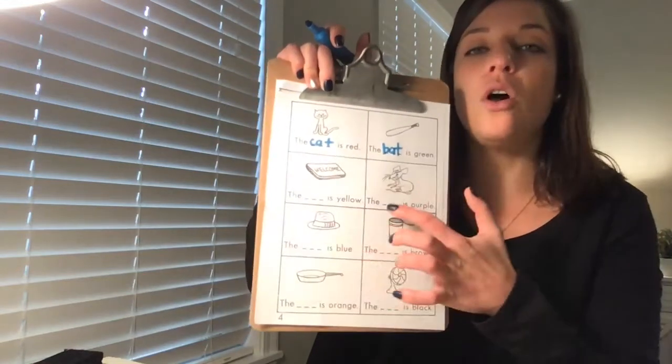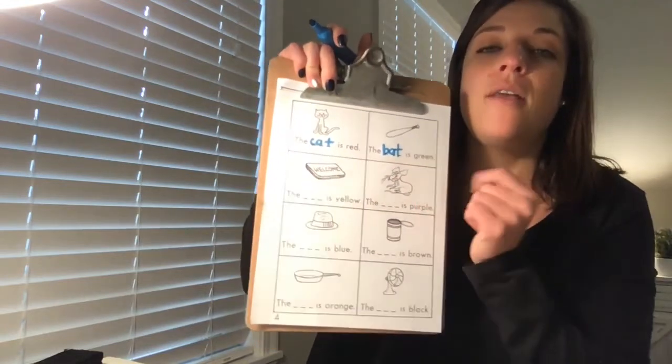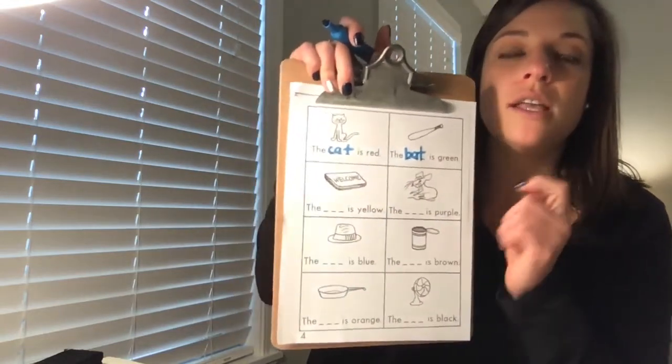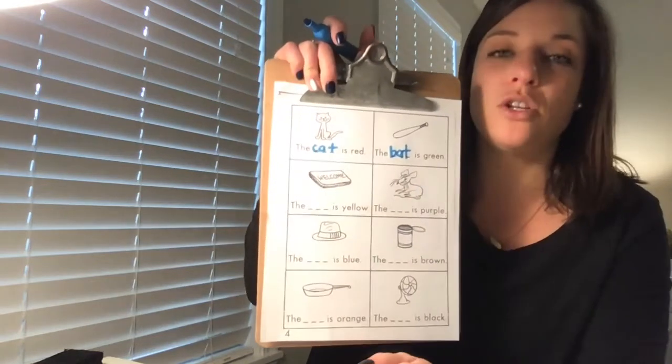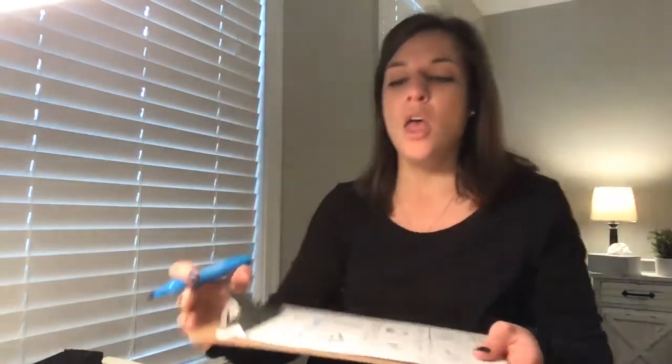So you're going to fill in all of your words here, stretching them out like we did with cat and bat. And then you're going to go back in with your crayons and you're going to color the picture the same color as the color word, okay? All right. Great job today, friends. I will see you tomorrow for your next phonemic awareness lesson.